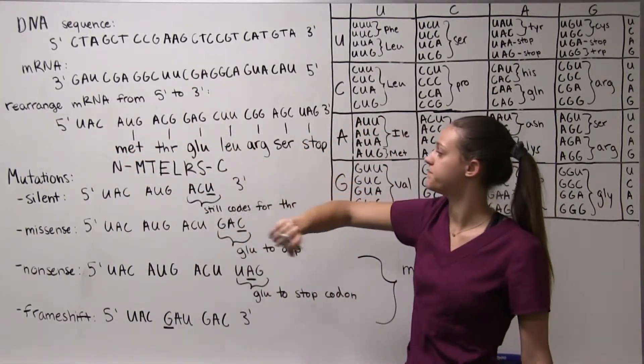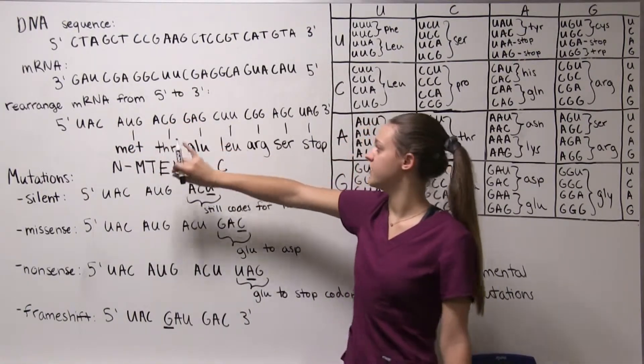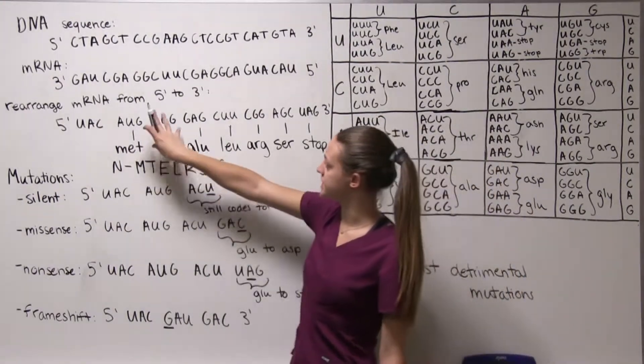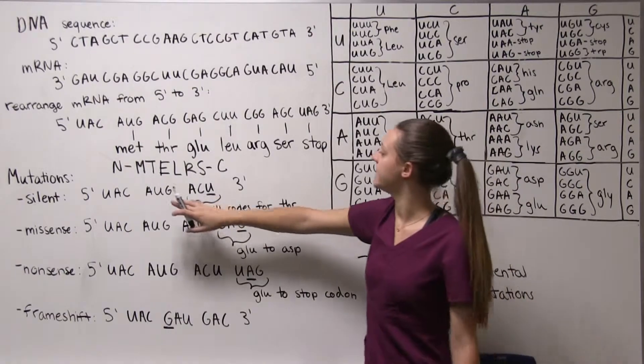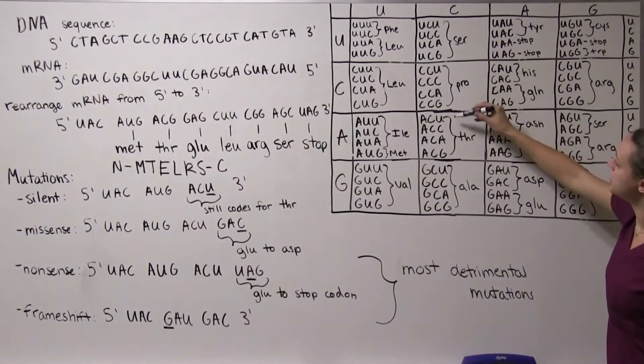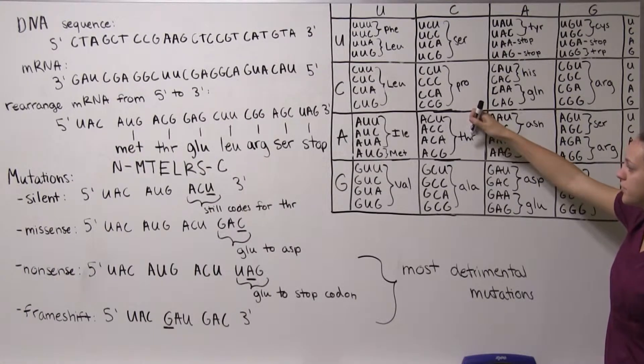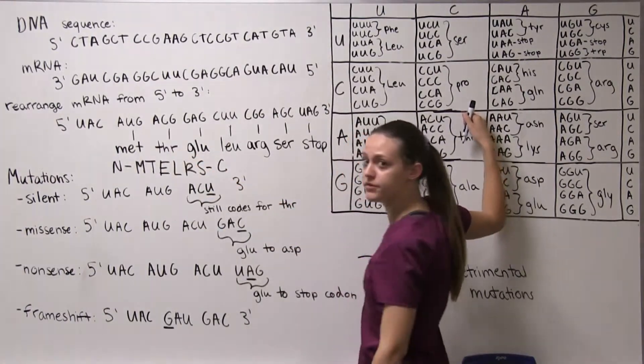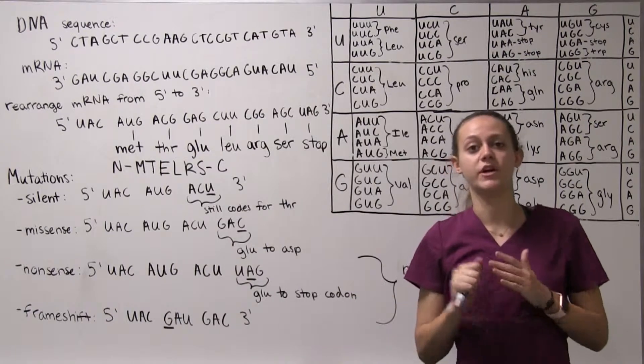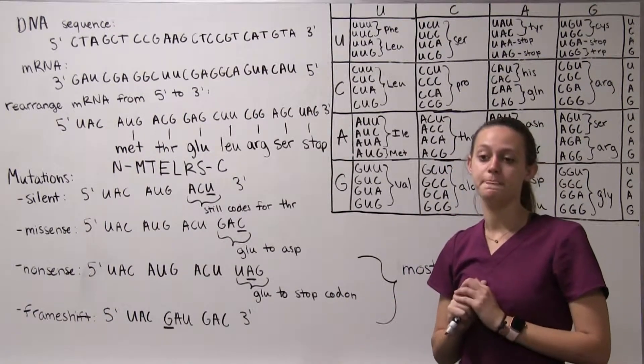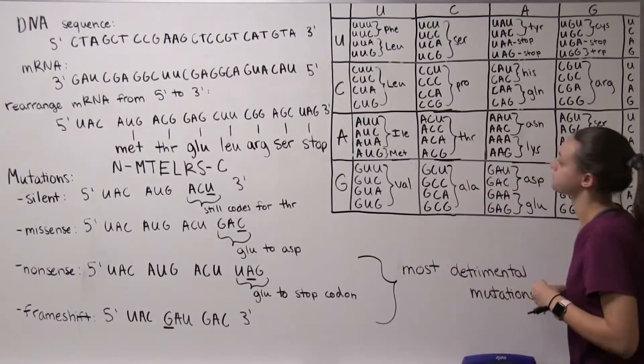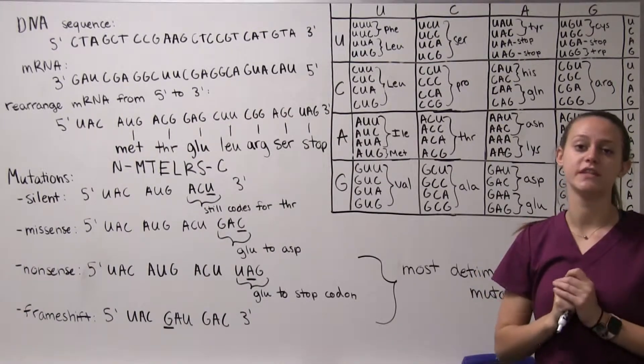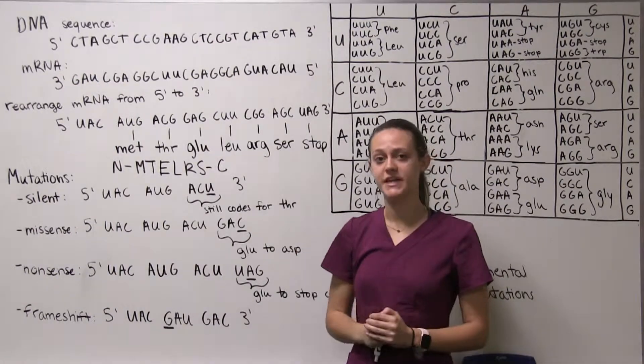We're going to take the mRNA sequence so we still have UACAUG and here instead of ACG we have ACU. So we mutated this G to a U but then if we look here ACU codes for threonine and our original one ACG also codes for threonine. So that's a silent mutation where the mutation doesn't actually affect the peptide that is coded for because the genetic code is degenerate, many codons code for the same peptide.